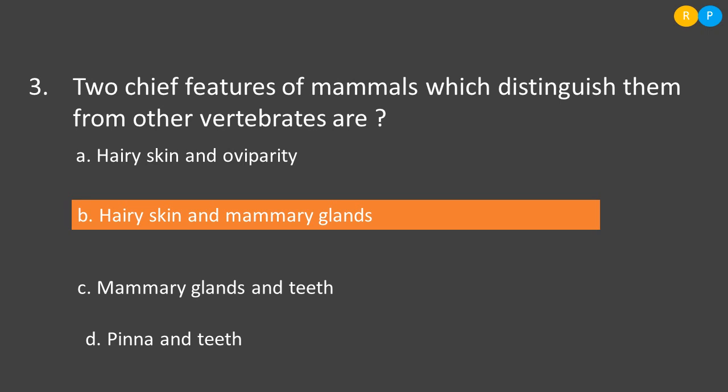Option C: mammary glands and teeth — teeth are present in some other vertebrates as well, so it is not a unique feature of mammals. Option D: pinna and teeth — ear pinna is also a unique feature of mammals, but teeth are not a unique feature. Among the options, the correct answer is Option B — hairy skin and mammary glands.